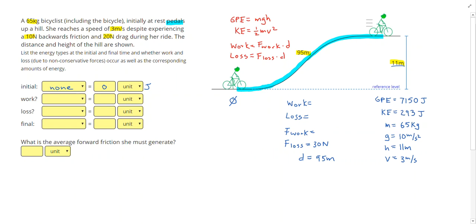This means that I know that at the final time she has a total combining these two together of 7,150 plus 293 gives me 7,443 joules. And that's going to be the amount of energy she has at the final time. So 7,443 joules. I can also go ahead and write down that yes, there was work due to her pedaling, yes, there was loss due to the backwards friction and drag, and at the final time she had GPE and KE.